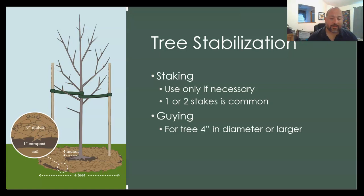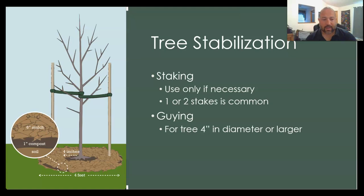For stabilization, staking and guying should only be used if necessary — if the tree cannot stand on its own. One to two stakes is common; three stakes are also used. Guying with wires is only appropriate for trees four inches in diameter or larger.